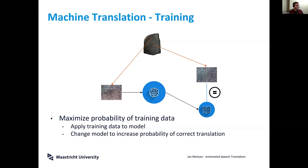The core idea is to always maximize the probability of the training data — to mimic what humans have done. Can our model somehow mimic how a human translates? Once we have trained the model — that's the first step — the model is then used for translation.